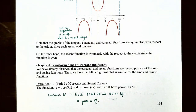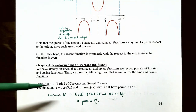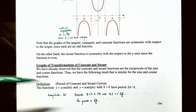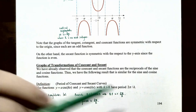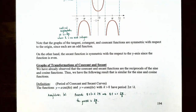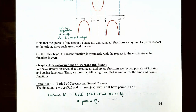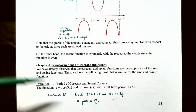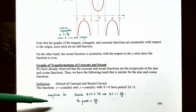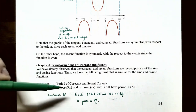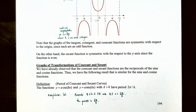Now let's talk about graphs and transformations of the cosecant and secant functions. We've seen that they are the reciprocals of the sine and cosine functions respectively. The functions y equals a times cosecant of kx and y equals a times secant of kx, where k is a positive number, have a period of 2π divided by k. Multiplying by k inside the argument affects the period, making it 2π/k rather than 2π. The amplitude of both curves is the absolute value of a.